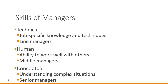The skills required of managers fall into three categories: technical, human, and conceptual. Technical skills are job-specific — the skills needed to perform a job effectively — and are typically the focus of line managers, who work directly with employees on the day-to-day tasks of an organization. Human skills are the ability to work well with other people, and middle managers focus on these. Conceptual skills are a high-level skill set involving understanding complex situations, abstract ideas, and the big challenges and goals of a company — most closely tied to senior or top-level managers.